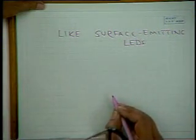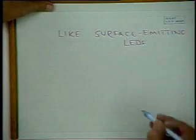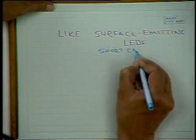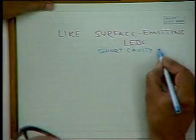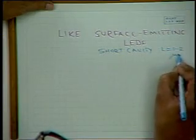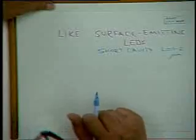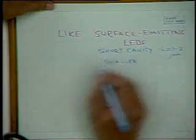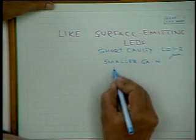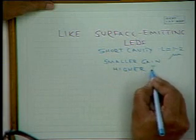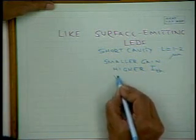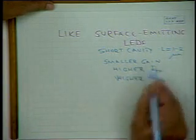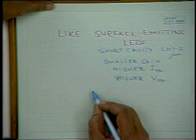These are very short-cavity devices — cavity lengths are of the order of one to two microns, whereas in the edge-emitting device it was a few hundred microns. This has disadvantages as well as advantages: short cavity means smaller overall gain because the path length is less, so the problem is that you have higher threshold current and also higher operating voltage. These are some of the disadvantages, but they have been overcome.